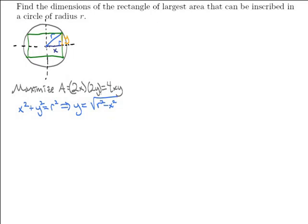And so I can substitute that in for this y right here in my area function. And it will become just that, a function of a single variable x. 4 times x times the square root of r² - x² or 4x times (r² - x²) to the 1/2 power. And now we can go ahead and maximize this.